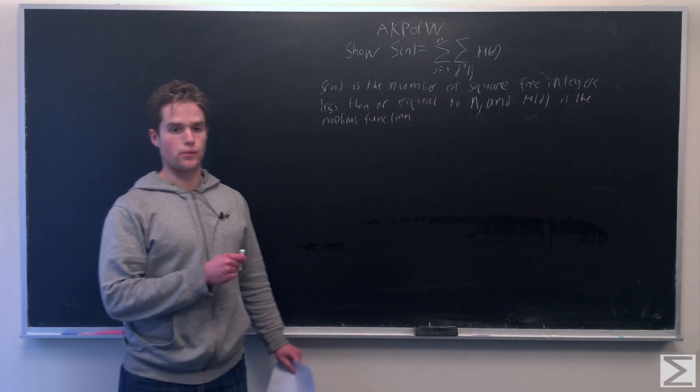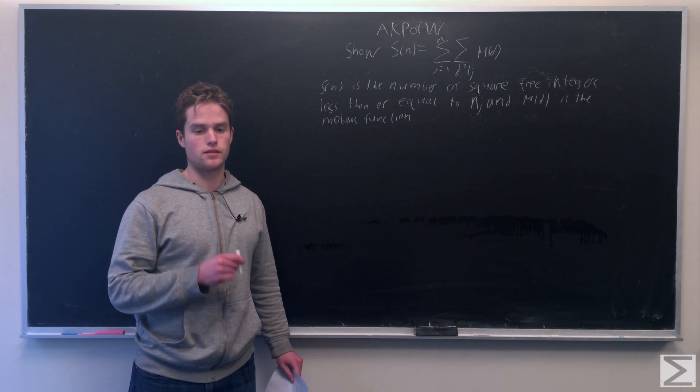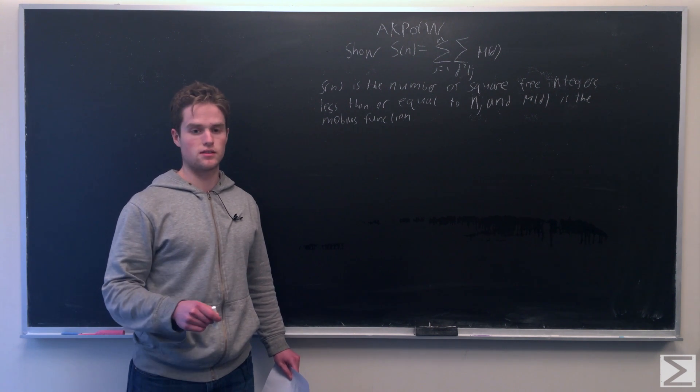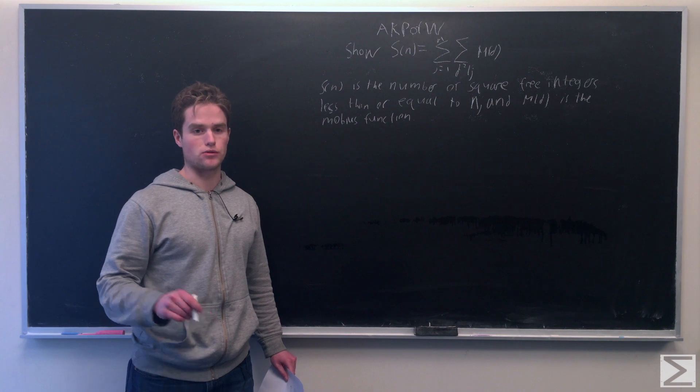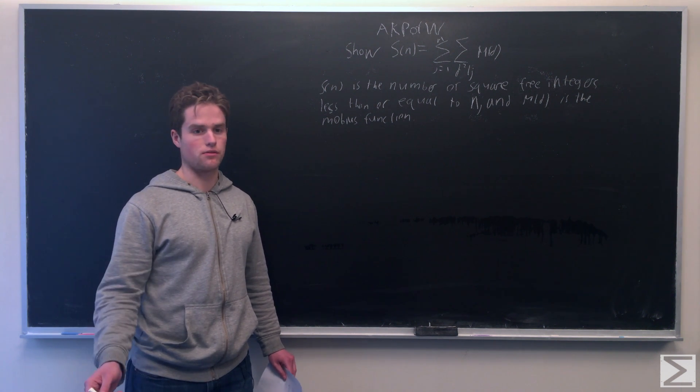So this would follow if we could prove that the sum over all d, Mobius function of d, such that d squared divides j, equals 1 if and only if j is square-free.